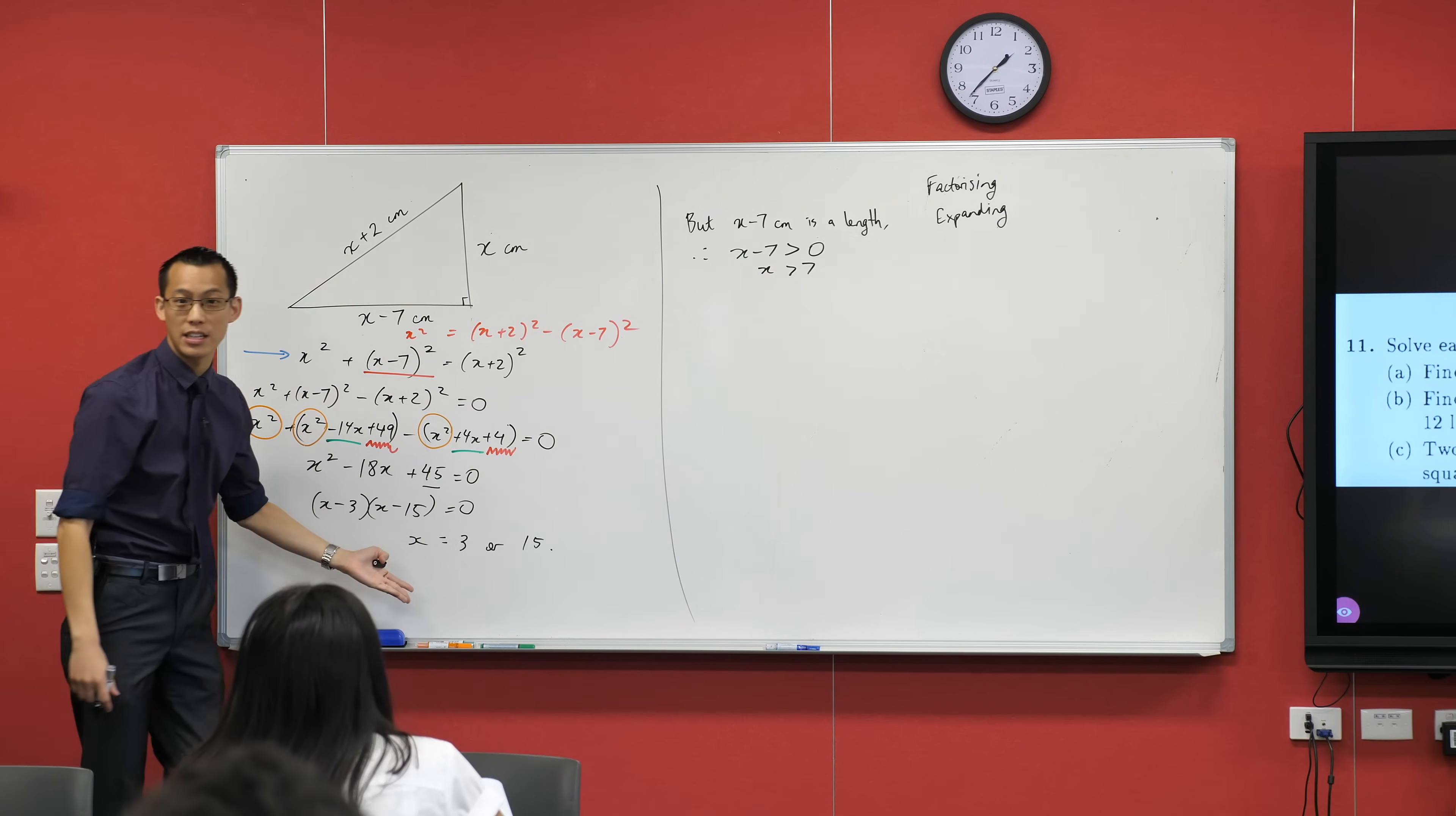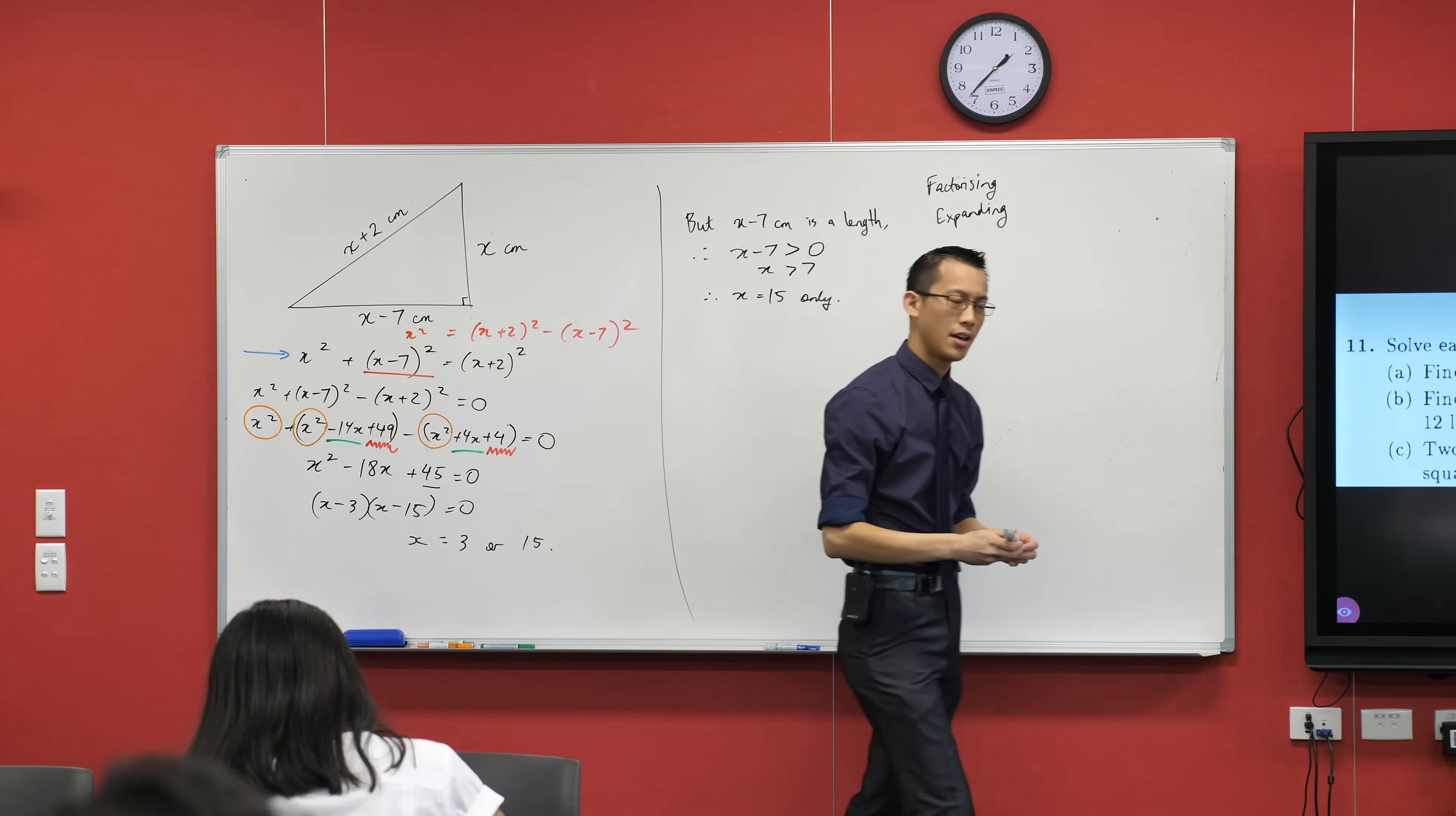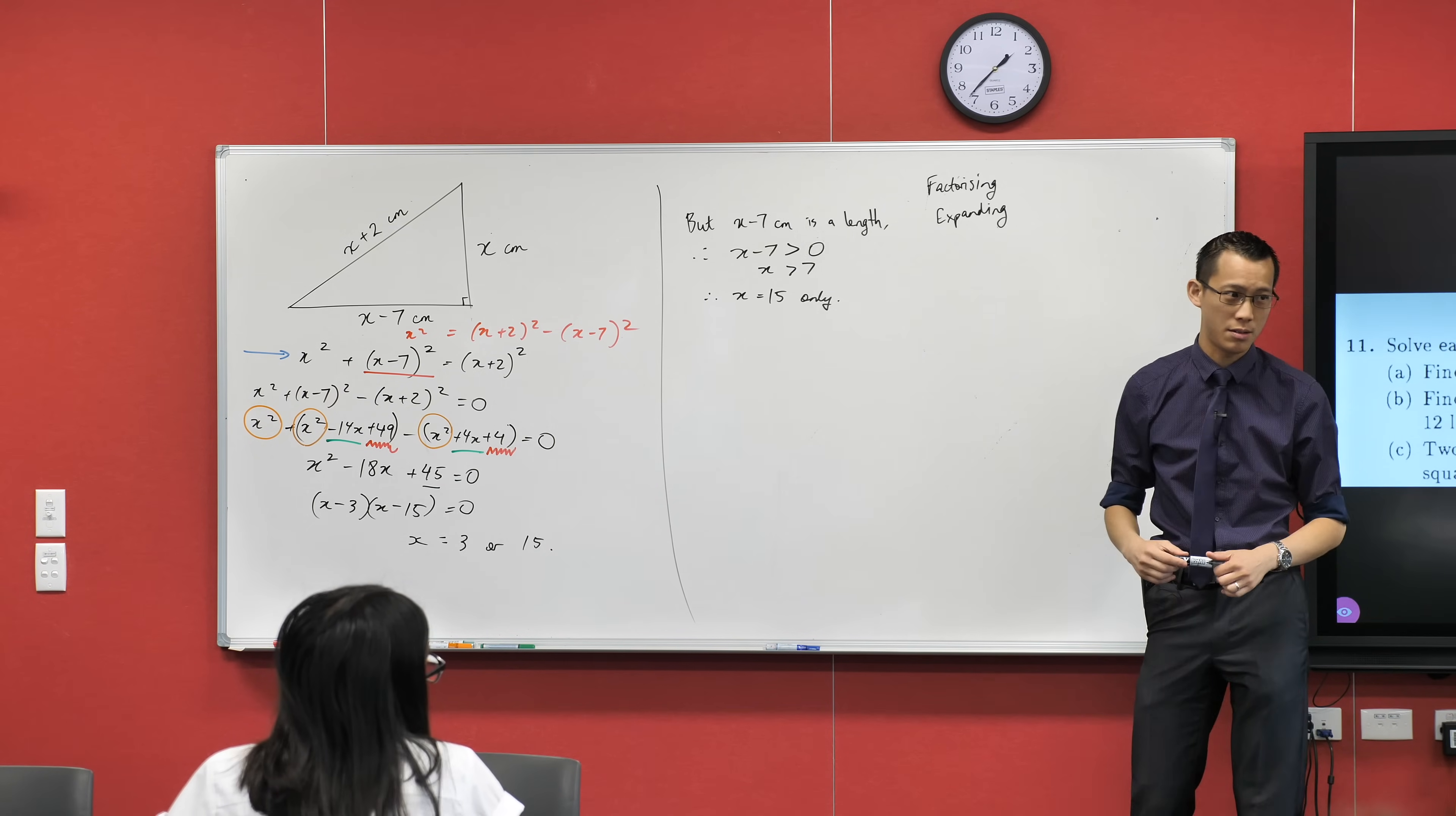So therefore, x equals 15 only, alright? So that's kind of sneaky, right? Because they didn't sort of, you know, your brain kicks into this mode and then you forget the kind of question you're actually looking at, a really, really common error for students to make.